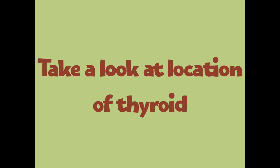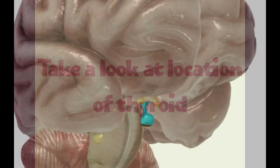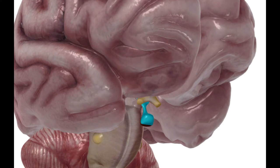Before we look at the thyroid gland's location, I want to talk about what controls it. You might think the thyroid gland is the end-all of the endocrine system, but the endocrine system is actually controlled by the brain. The brain is basically the thermostat for the thyroid gland.